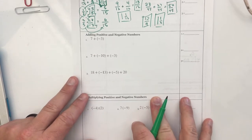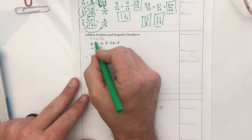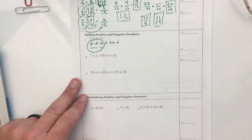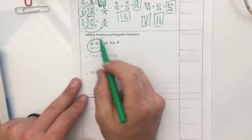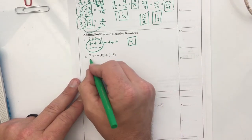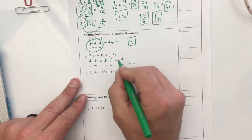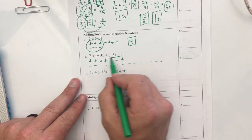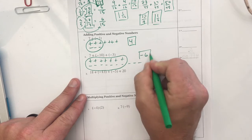Adding positive and negative numbers. Seven positives: one, two, three, four, five, six, seven. Three negatives: one, two, three. That makes what? Well, four of it. The circled part is zero. The circled part is zero, because the three positives and the three negatives cancel out, so my answer is four. Let's see. One, two, three, four, five, six, seven. One, two, three, four, five, six, seven, eight, nine, ten, and then three more. This is seven plus negative ten plus negative three. These all make what? Zero. And I'm left with negative six.